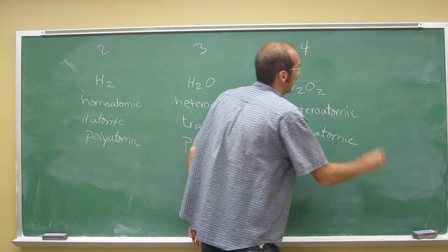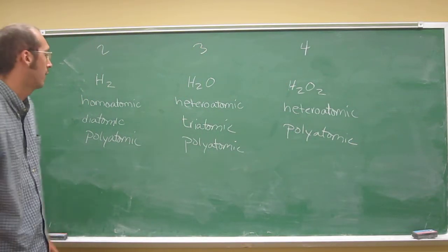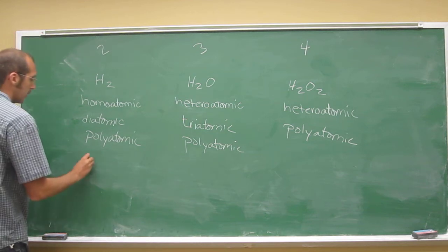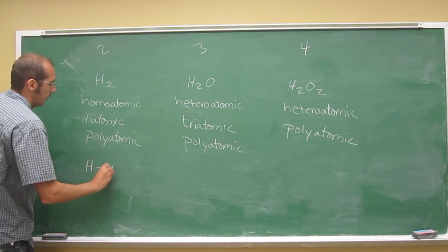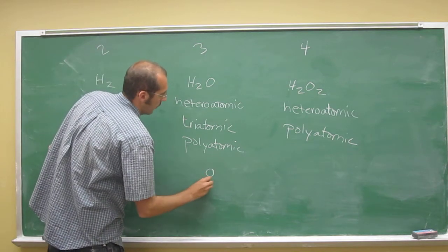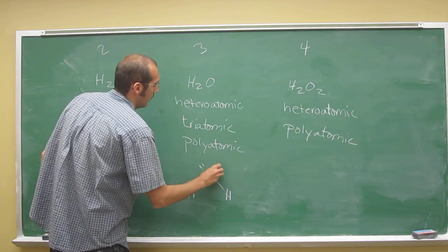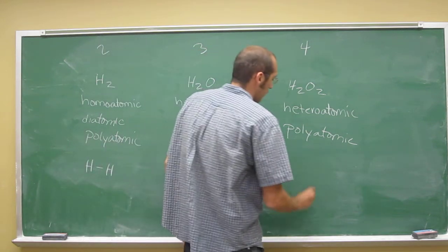So the only classification that hydrogen peroxide can have is polyatomic. If you're wondering what these guys look like, hydrogen looks like that. Water looks like this - it's got that bent structure with its lone pairs.